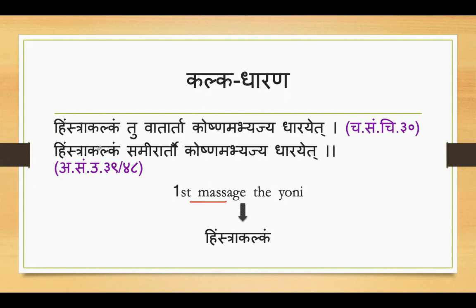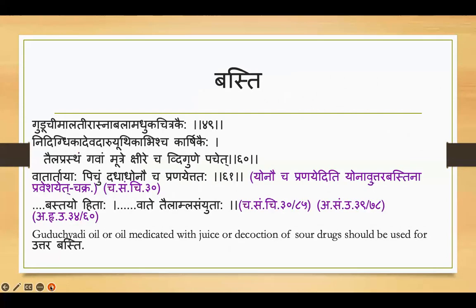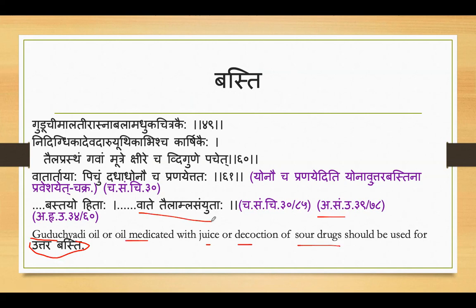For Pichu, Guduchyadi and Rasnadi oil are mentioned, though the specific names are not in the classics. Based on first drug letters, we can call them Guduchyadi oil (starting with Guduchi) and Rasnadi oil (starting with Rasna). Vagbhata Samhita substituted Nidika with Vyagri, and used roots of all drugs: Rasna, Malti, Chinnaruh, Madhuka, Bala, Vyagri, Devadaru, Chitraka, Yuthika Mula. For Uttar Basti, according to Ashtanga Sangra and Hrudaya, oil processed with Vatahara and Amla drugs is used.